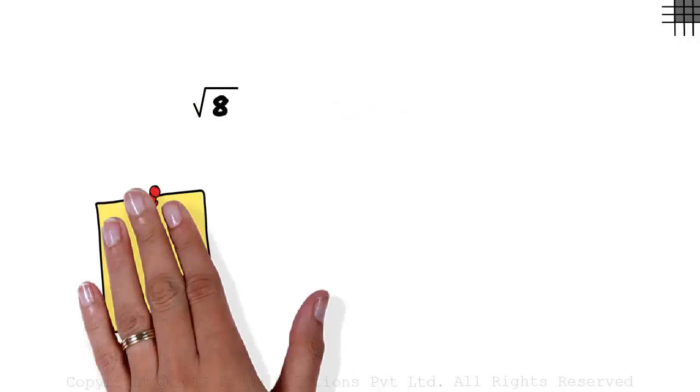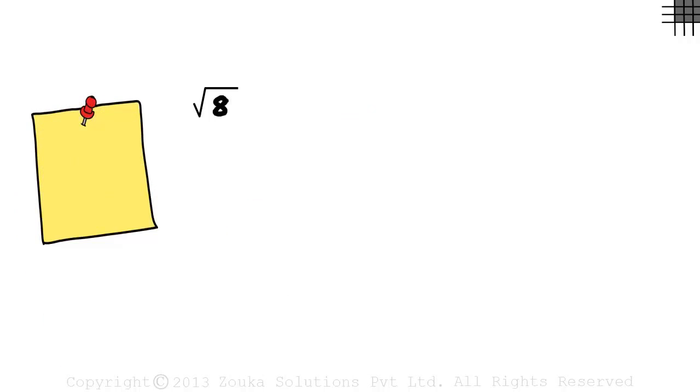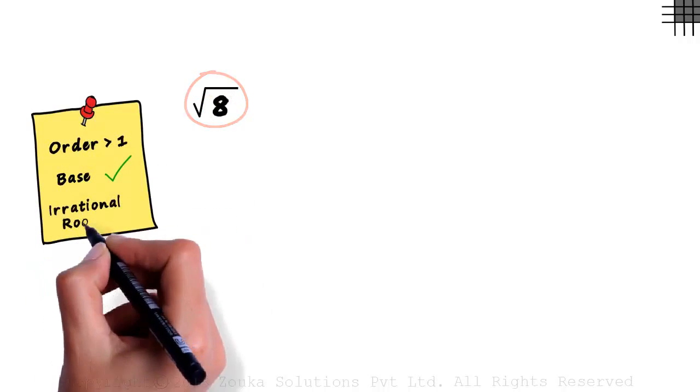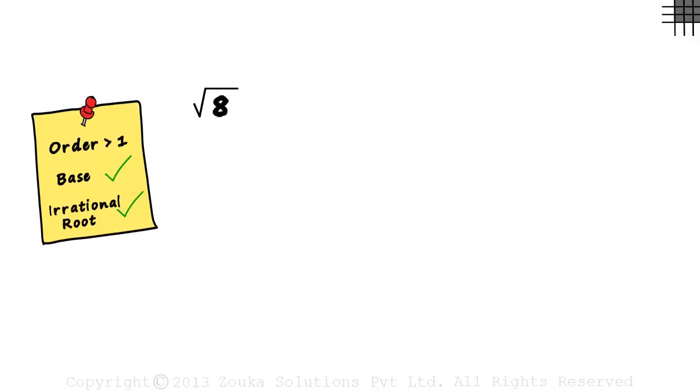Consider the square root of 8. It's an irrational number since all three conditions are satisfied. Let's review the three conditions. It has an order which is a natural number greater than 1. The base is a positive rational number and it's an irrational root, which means the value of root 8 is irrational.